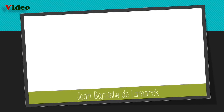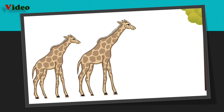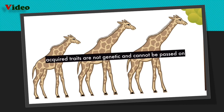Jean-Baptiste de Lamarck believed that living things pass acquired traits on to their offspring. He understood heredity and the passing on of traits, but he had one major flaw: he wrongly believed that an animal could make changes to itself during its lifetime — like a giraffe stretching its neck to reach leaves — and that those traits would be passed on to its children. But this is wrong; acquired traits are not genetic and cannot be passed on to offspring.